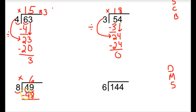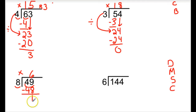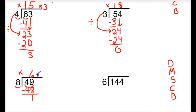Next step is to subtract: 49 minus 48 is 1. Then we need to check — it's very important that we check to see if 1 is less than 8. The number that we subtracted: 49 minus 48 left us with 1 as our difference, and we have to check to make sure it's less than our divisor. In this case, it is. Then we go on to bring down, but there are no other numbers to bring down, so I'm finished with this problem. My quotient is 6, remainder 1.